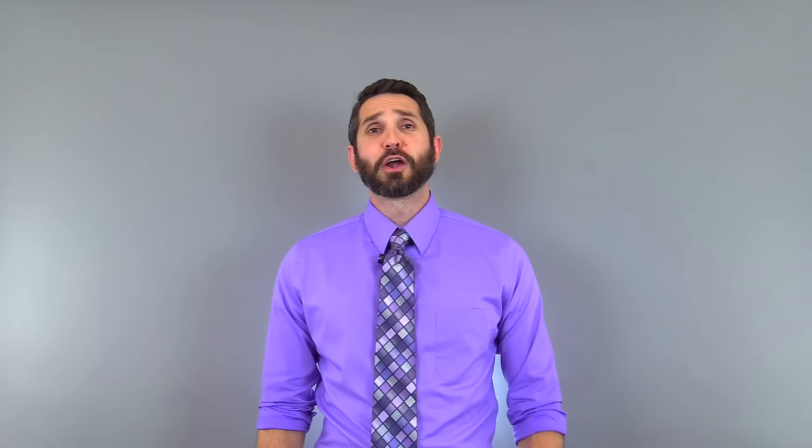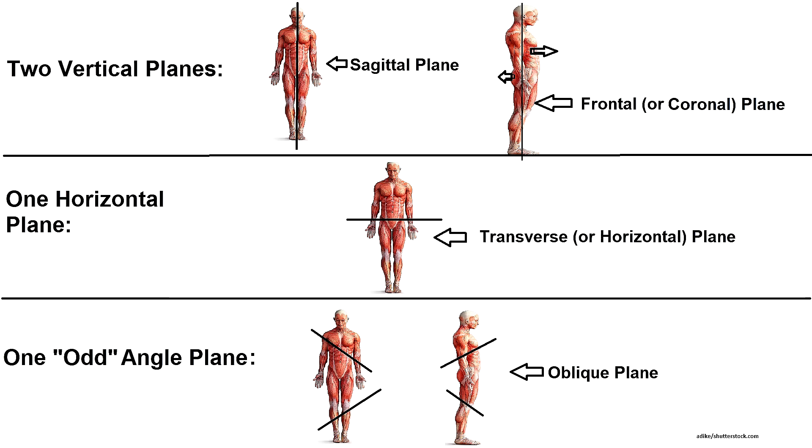When thinking of a body plane, picture an imaginary flat surface resembling a glass rectangle which divides the body into two portions. There are four major types of body planes that you need to know for most of your anatomy and physiology courses, and a super easy way to remember these is the acronym SOFT, which stands for sagittal, oblique, frontal, and transverse planes.